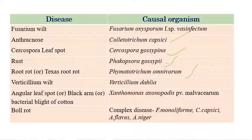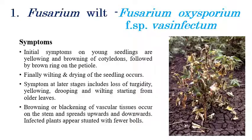Verticillium wilt, which is caused by Verticillium dahliae. And Angular leaf spot, also known as Black Arm or Bacterial Blight of cotton, which is a very important disease caused by Xanthomonas axonopodis pv. malvacearum. And finally, Boll Rot, which is a complex disease caused by Fusarium moniliforme, Colletotrichum capsici, Aspergillus flavus, and Aspergillus niger.